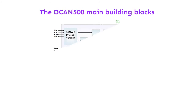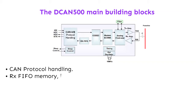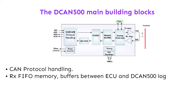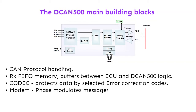The DCAN 500 main building blocks consist of: CAN protocol handling; RX FIFO memory, which buffers data between the ECU and DCAN 500 logic; and a Codec, which protects data by selected error correction codes. Also a Modem, which phase modulates messages over the powerline.